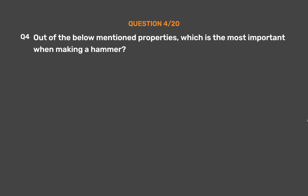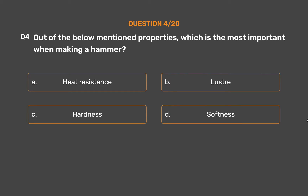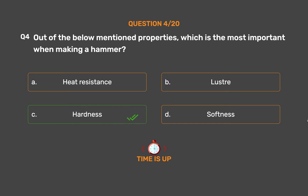Question number 4. Out of the below mentioned properties, which is the most important when making a hammer? Option A: Heat resistance. Option B: Lustre. Option C: Hardness. Option D: Softness. The correct answer is Option C, Hardness. The properties of materials are the key factor while making objects intended for a particular use. Steel is used for making hammers as metals are generally hard in nature.